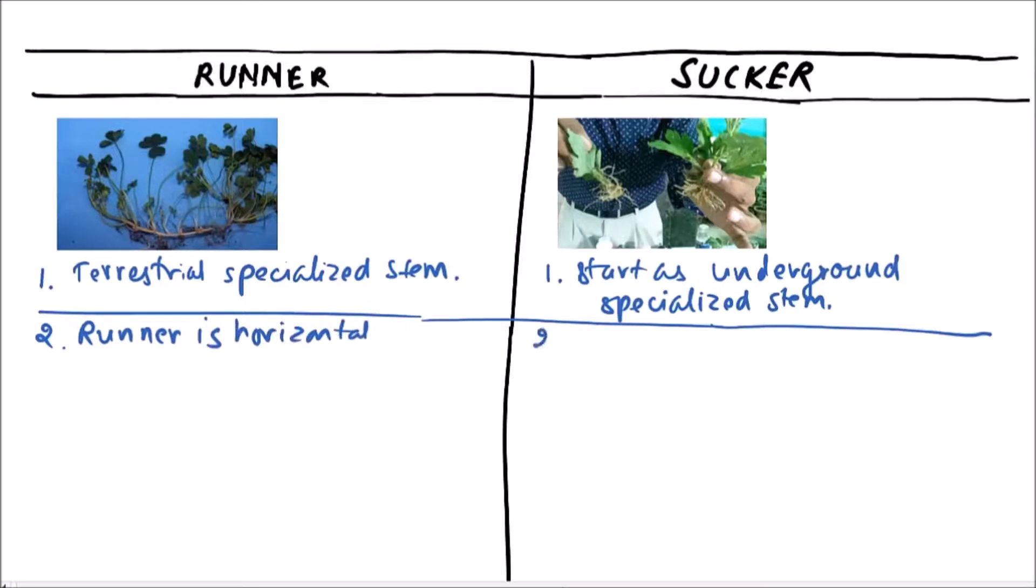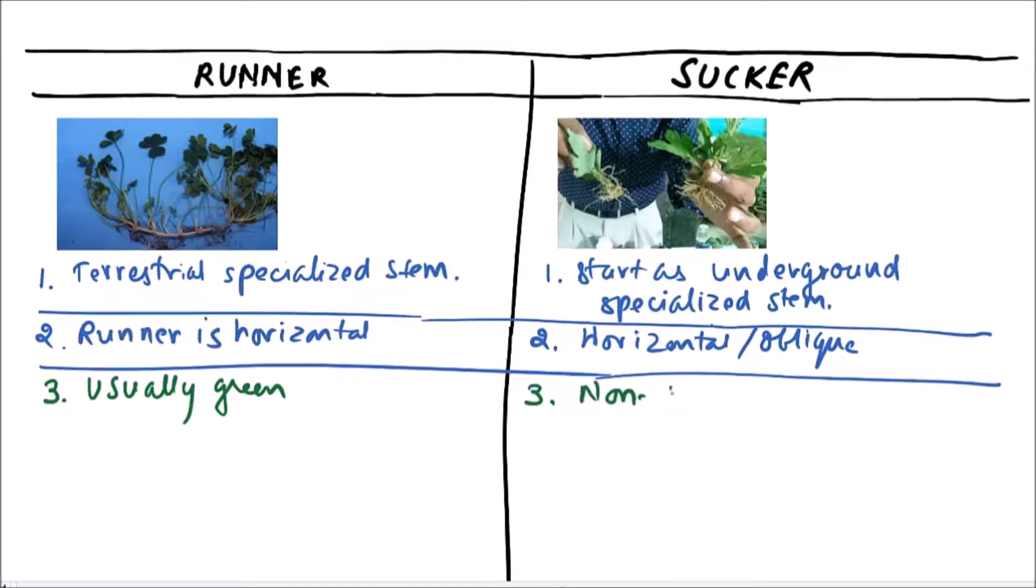While the sucker is horizontal or oblique, runner is usually green, while the sucker is non-green.